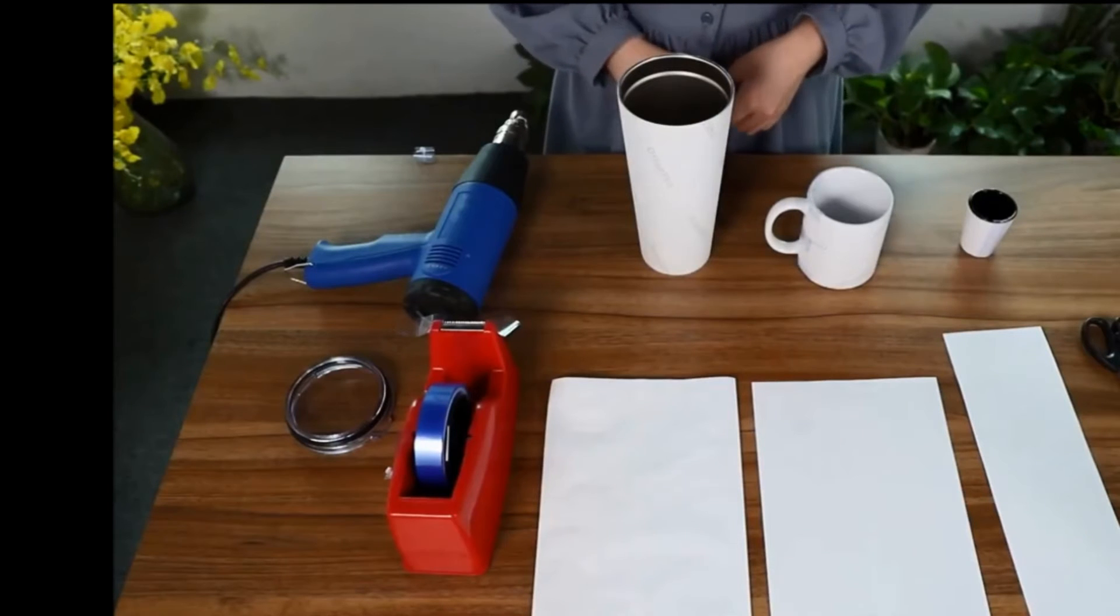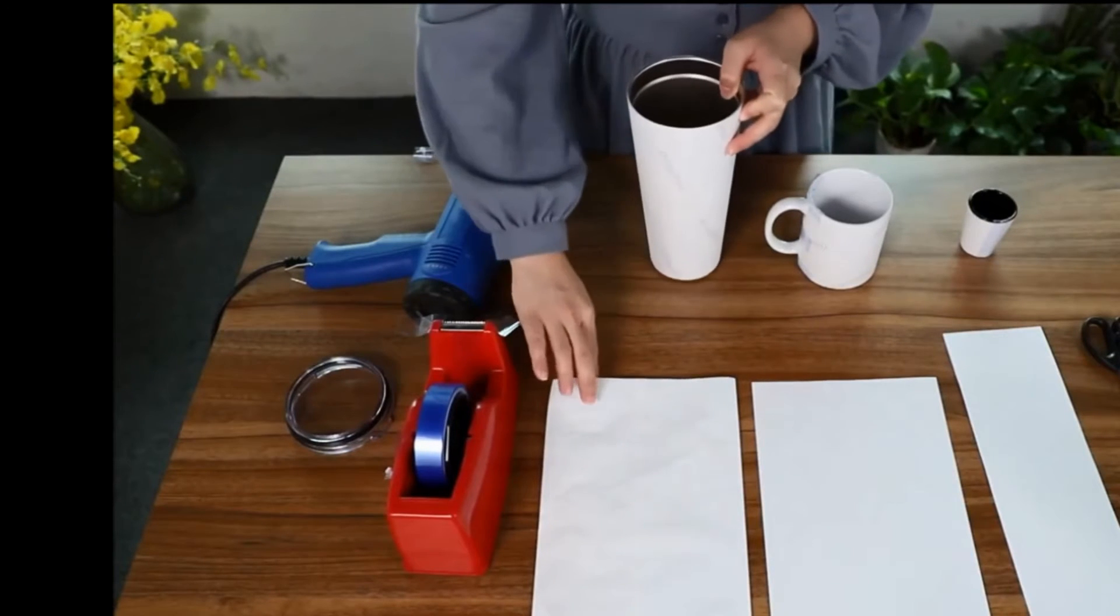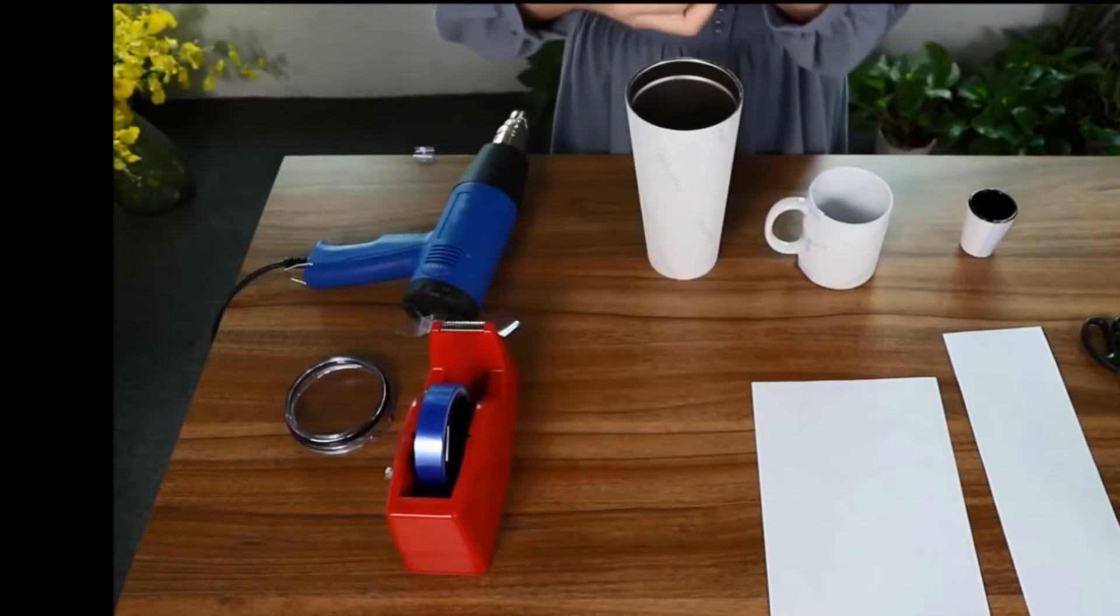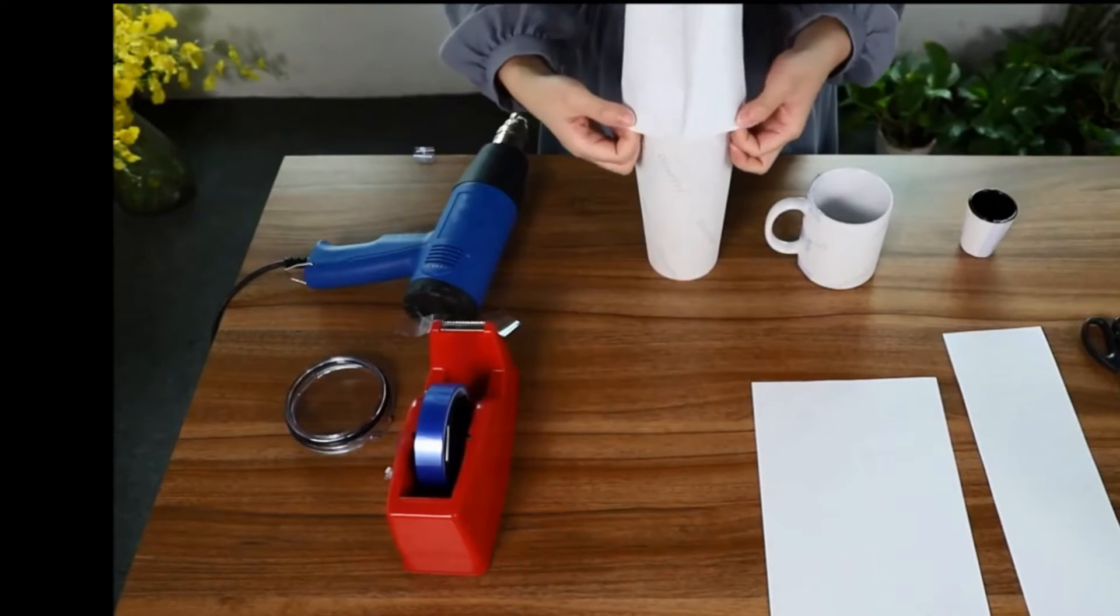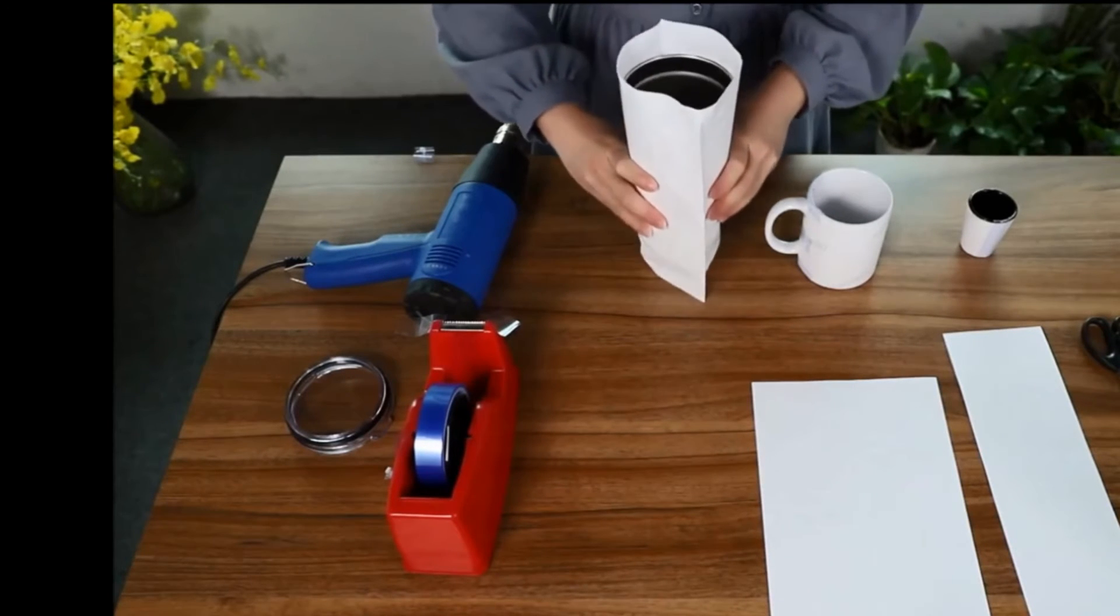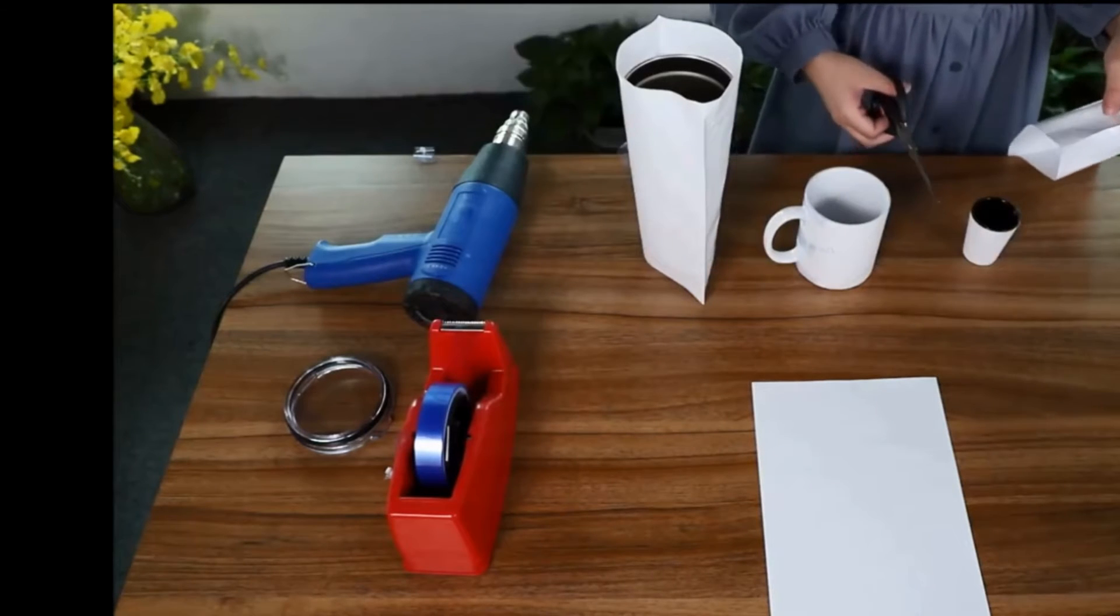Now it's time for the shrink film. For the large tumbler, I just need to place the shrink film around it.